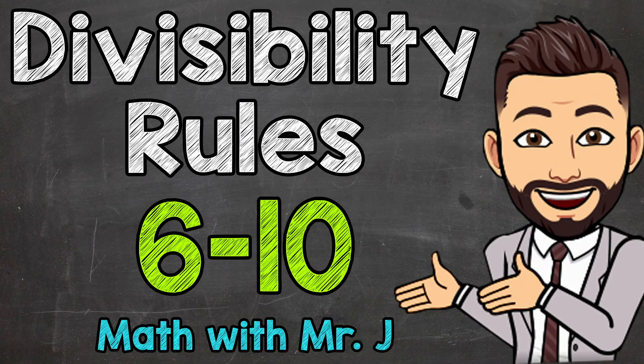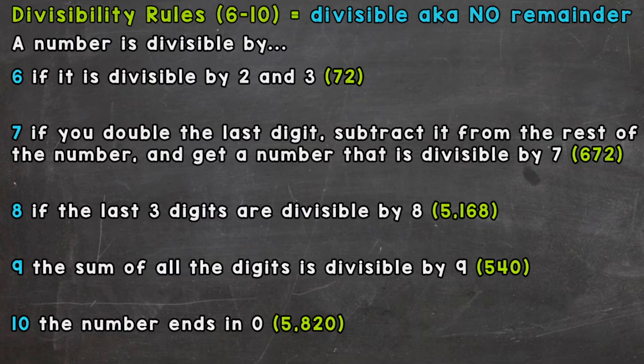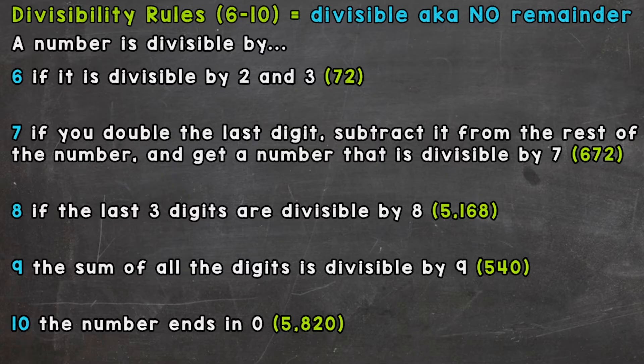Welcome to Math with Mr. J. In this video, I'm going to go through the divisibility rules for 6, 7, 8, 9, and 10. I dropped the link to the video for the divisibility rules for 2, 3, 4, and 5 down in the description. But let's jump right into the rules for 6 through 10. Remember, a number is divisible by another number if we can divide them and we don't get a remainder.